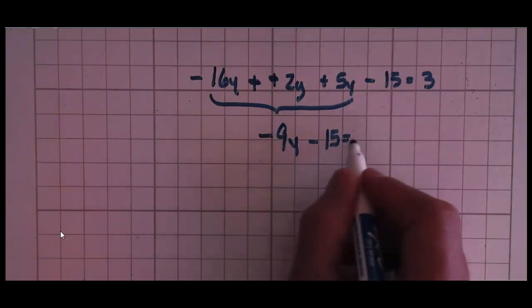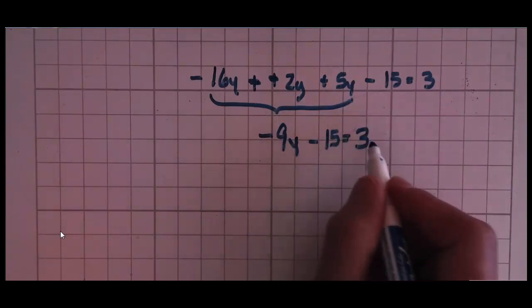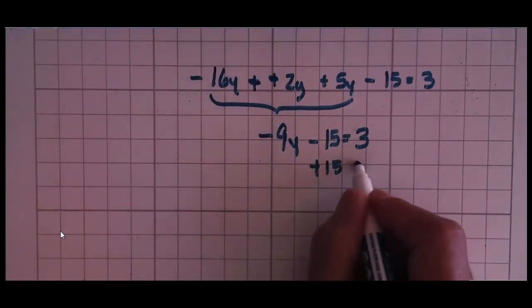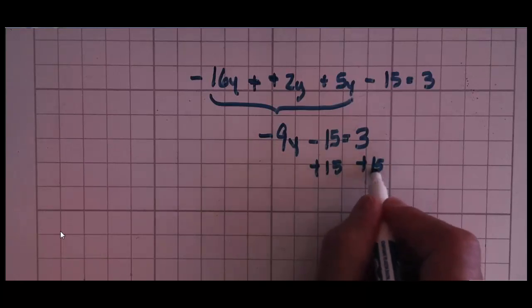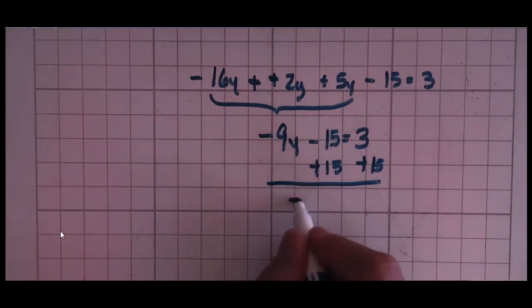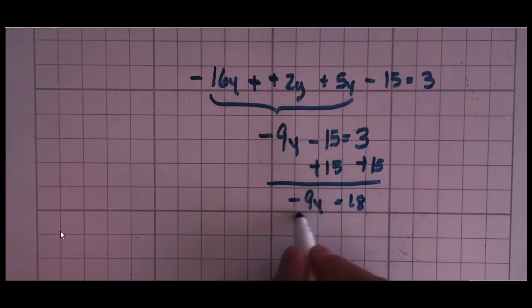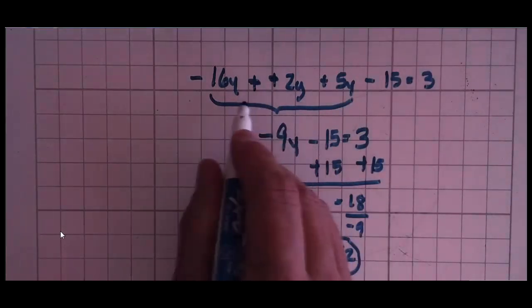Sorry, negative 9y minus 15 = 3. And now it's a very simple problem to solve. You've done this many times before. I'm simply going to add 15 to both sides. I get negative 9y = 18. Divide both sides by negative 9, and I get y = negative 2. The trick to this problem was doing this in the beginning. Once you get that done, it's easy.